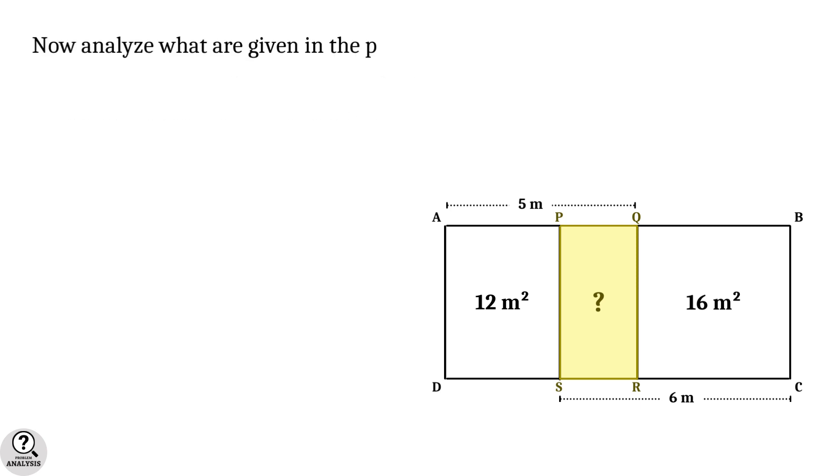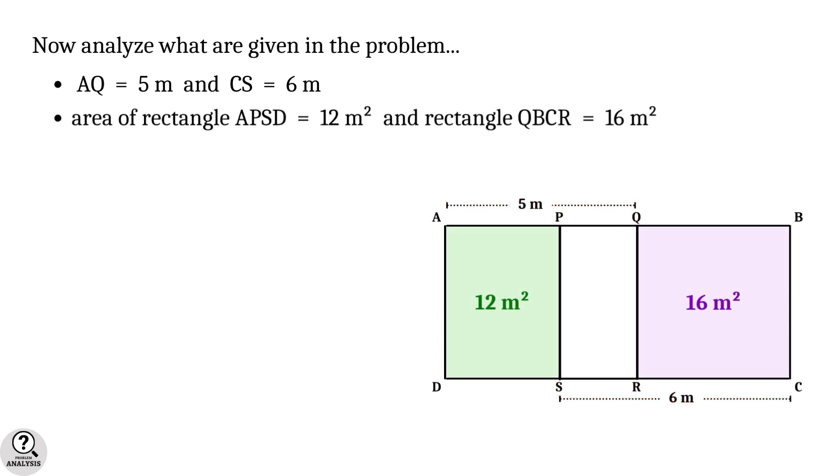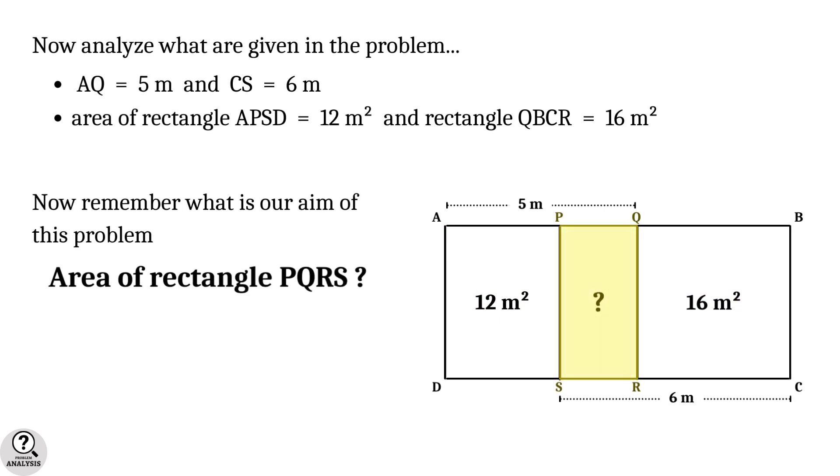Now we are going to analyze the problem. We have the side AQ equal to five meters and the side CS equal to six meters. The area of the rectangle APSD is 12 meters square and for the rectangle QBCR the area is 16 meters square. Now what exactly is our aim? It is nothing but to find the area of the rectangle PQRS. This is the structure of our problem, so always keep in mind.